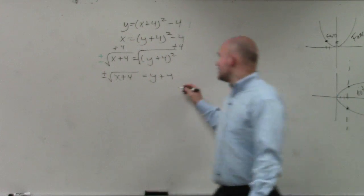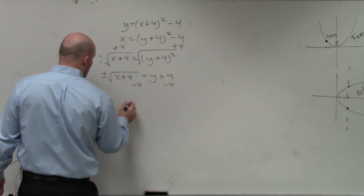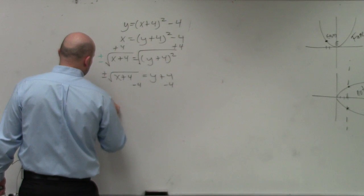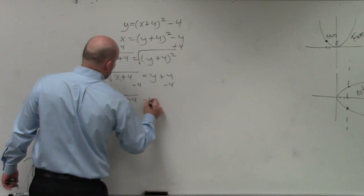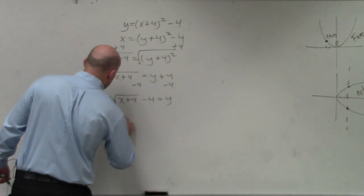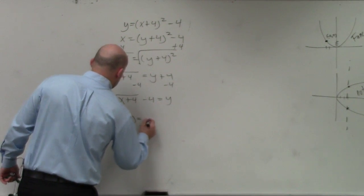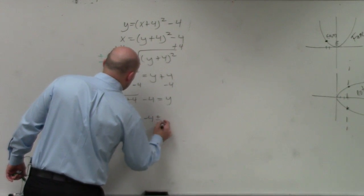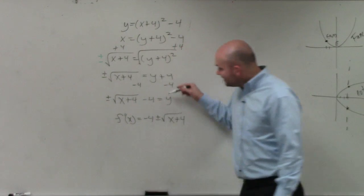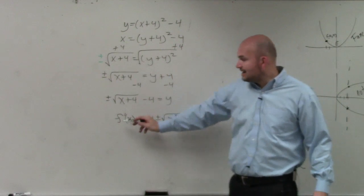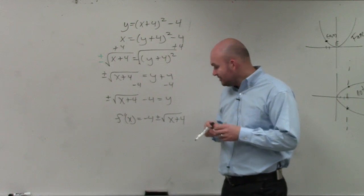So now I just subtract the 4. And I have plus or minus the square root of x plus 4 minus 4 equals y. Or I could write f inverse of x is equal to negative 4 plus or minus the square root of x plus 4.